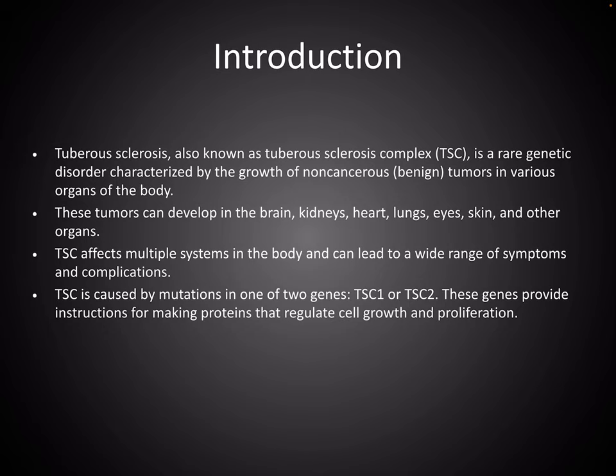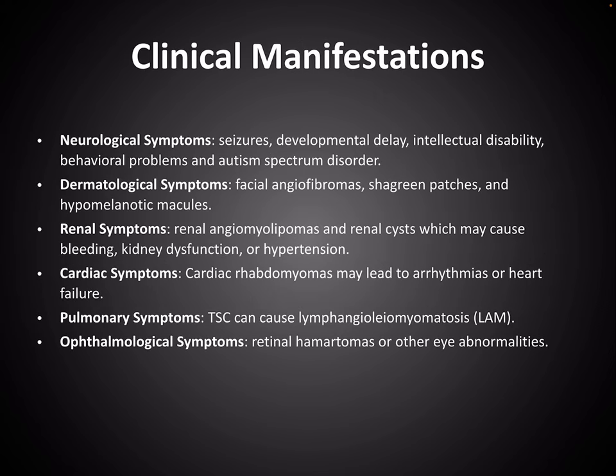It is caused by mutation in one of two genes, TSC1 or TSC2, which instruct for making proteins that regulate cell growth and proliferation. Neurological symptoms such as seizures, developmental delay, intellectual disability, behavioral problems and autism spectrum disorders are seen.